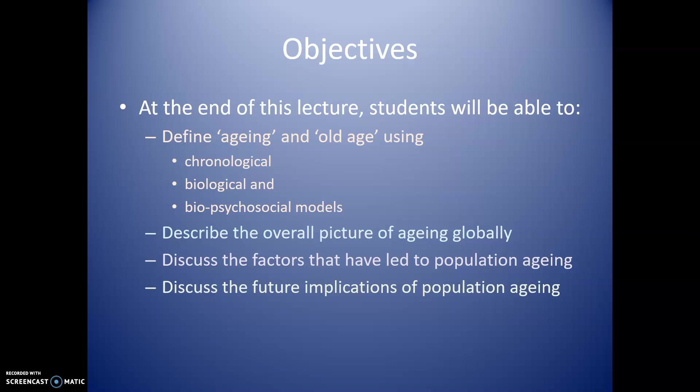At the end of this lecture you will be able to define aging and old age using a variety of parameters including chronological age, biological age, and biopsychosocial models. You will be able to describe the overall picture of aging globally, discuss the factors that have led to population aging, and discuss the future implications of population aging.